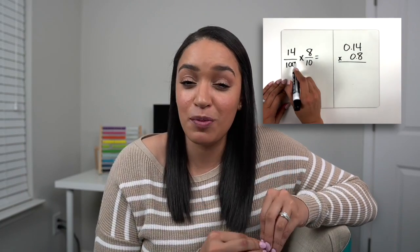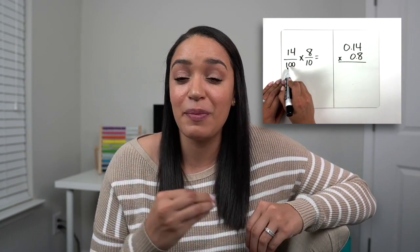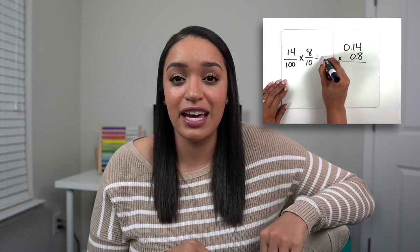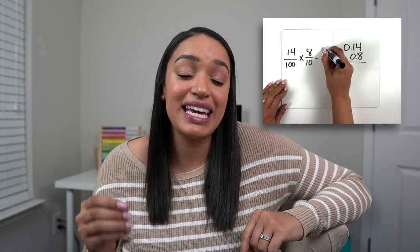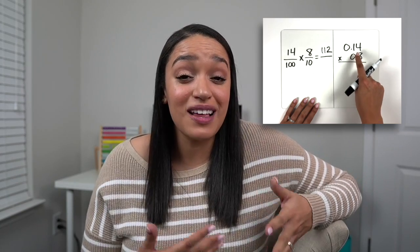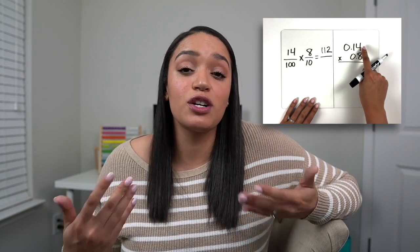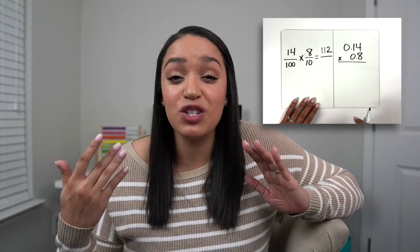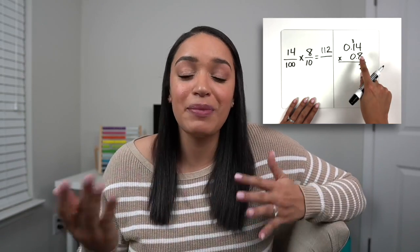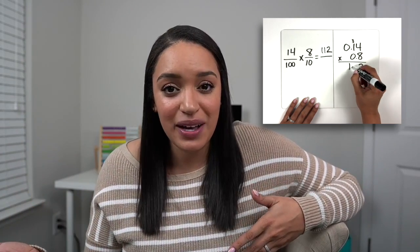Let's start with the algorithm for multiplying fractions. We know the algorithm is to multiply the numerator by the numerator and the denominator by the denominator. So we multiply the two numerators together: 14 times 8, and we get 112. With multiplying decimals, students are often taught to simply ignore the decimals and treat them like whole numbers for now. So that leaves us with 14 times 8, which is also 112.